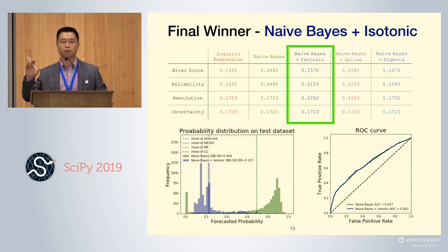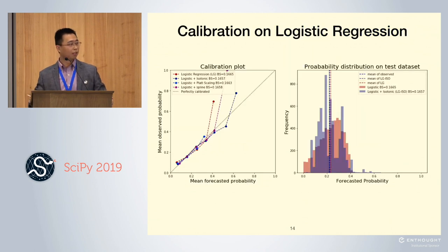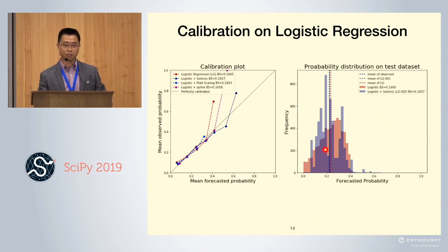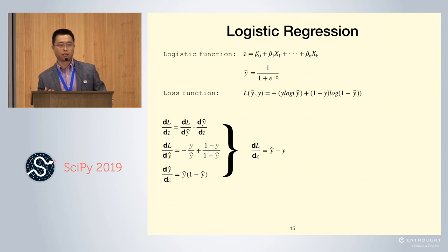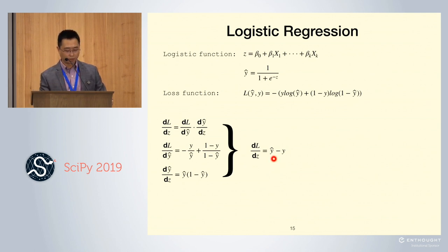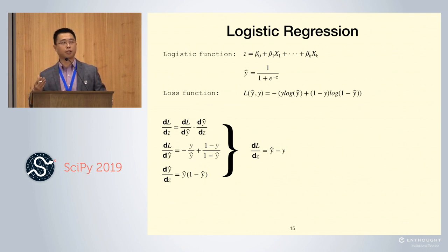You might say it's not a fair comparison because we didn't calibrate our logistic regression. If we apply our three calibration algorithms on top of the logistic regression output, the Brier score barely changes, although the distribution shifts a little. Why? If you look at the loss function of logistic regression, during model training, logistic regression is trying to minimize the difference between the forecasted probability and the actual outcome. So if your logistic regression has converged, it guarantees the lowest Brier score. That is the reason calibration on logistic regression doesn't improve the Brier score.